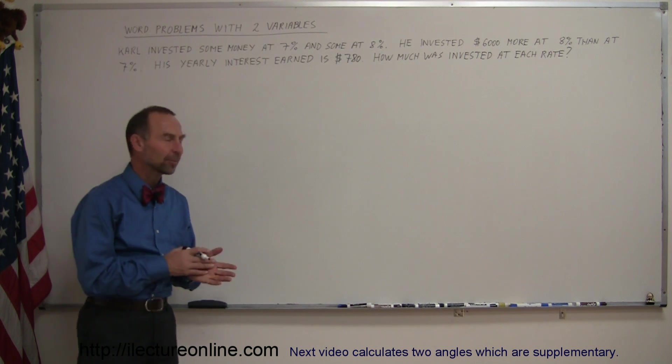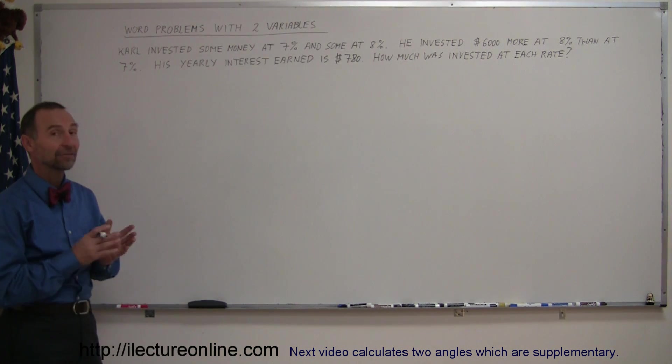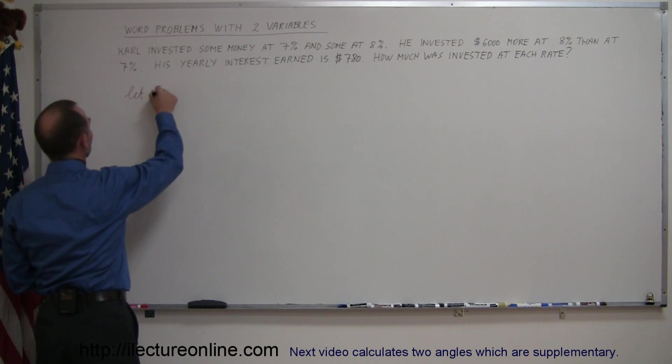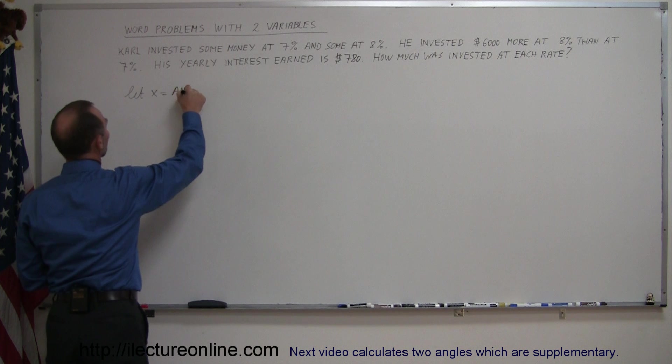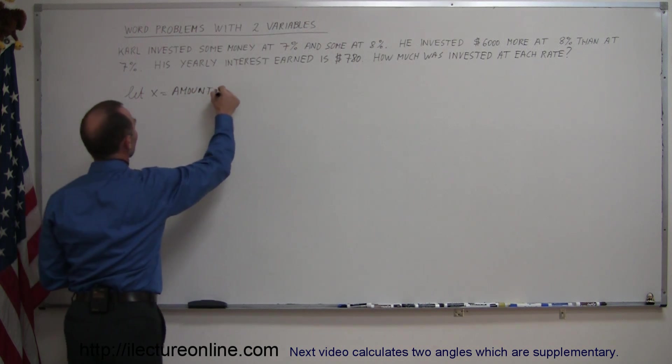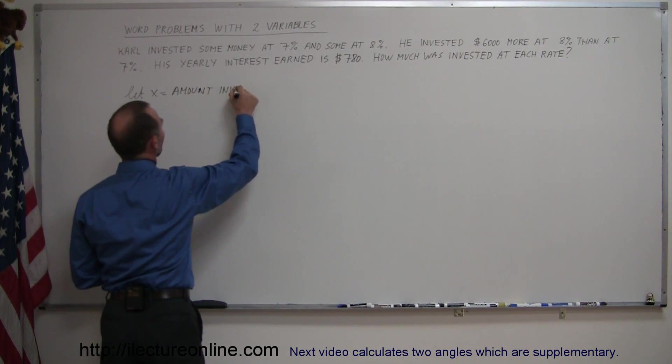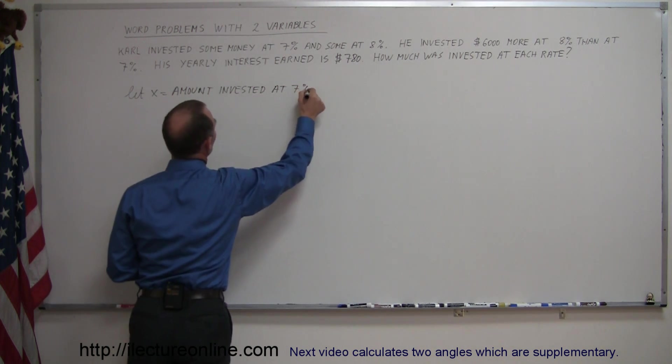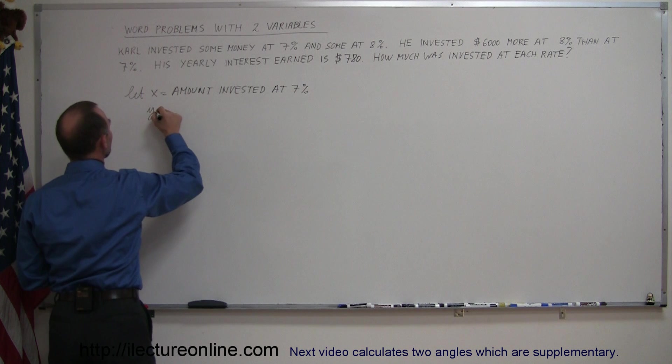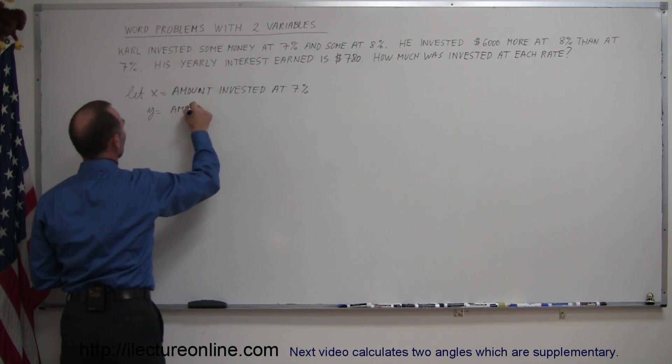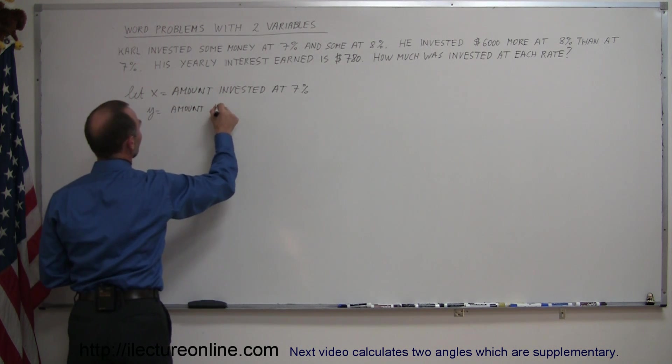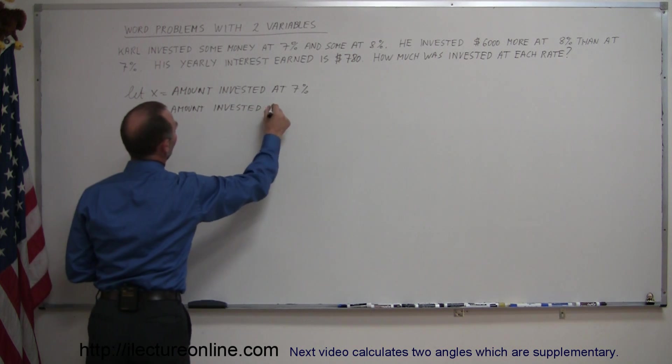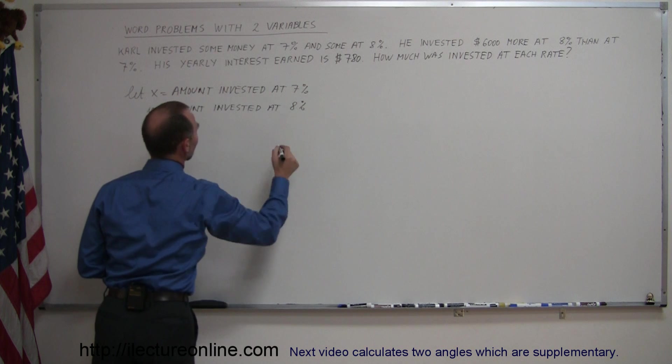Just like all these types of problems with two variables, let's define very carefully what each variable represents. So let x equal the amount invested at 7% and let y equal the amount invested at 8%.